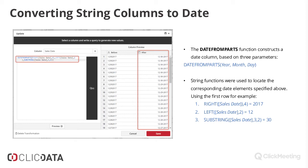The DATEFROMPARTS function requires three parameters: year, month, and day, in that exact order. However, the date values in our source data are actually ordered by month, day, and year, with no dashes or anything in between — it's purely numerical. So that format is not a true date format that can be directly parsed.